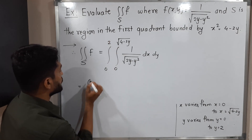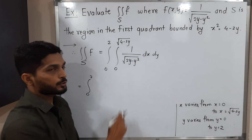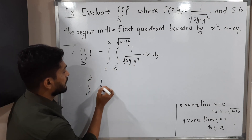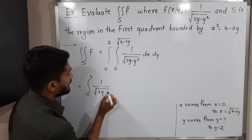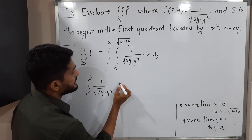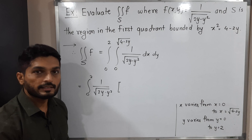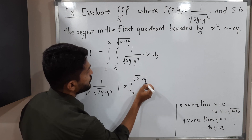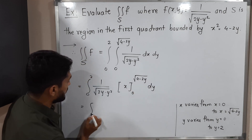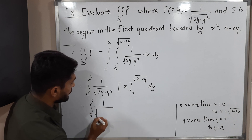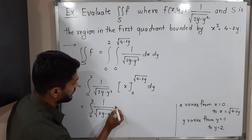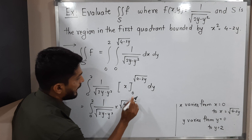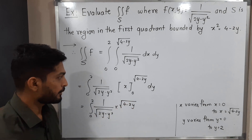The inner integration is with respect to x, so y and functions of y are constant and can be taken outside. So we have ∫₀² [1/√(2y − y²)] · [x]₀^{√(4−2y)} dy. Putting in the upper limit gives √(4 − 2y), and putting in 0 gives 0, so we have ∫₀² √(4 − 2y) / √(2y − y²) dy.